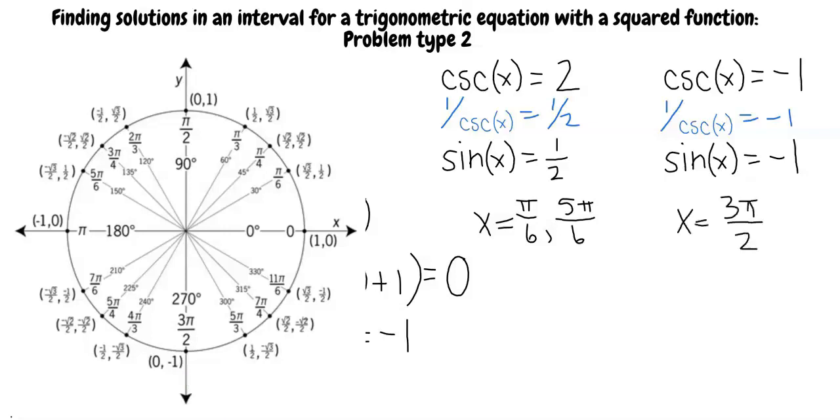Therefore, we will list all of our possible answers together in order from smallest to largest, and we know that x equals pi over 6, 5 pi over 6, and 3 pi over 2.